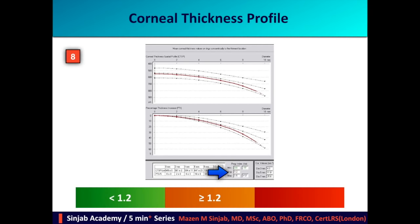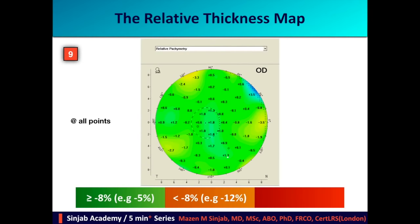We have to study the average number in the corneal thickness profile. The cut-off point is 1.2. If the number is 1.2 or above, it is considered a moderate risk factor. The relative thickness map correlates the measured cornea with the average of the normal population, displaying numbers in minus or plus. Minus means the area is thinner than average normal, plus means thicker. The cut-off point is 8%, so if a value is less than minus 8% — for example minus 12% — at any point on the map, it is considered a moderate risk factor.